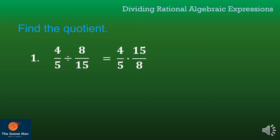Remove the greatest common factor between 4 and 8. So 4 divided by 4 is 1, and 8 divided by 4 is 2. Next, remove the greatest common factor between 5 and 15. So 5 divided by 5 is 1, and 15 divided by 5 is 3. Multiply the remaining factors: 1 times 3 is 3, and 1 times 2 is 2, giving us 3 over 2.